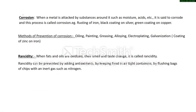Now at the last part of this chapter: corrosion. You are familiar with the term rusting — rusting of iron is one example of corrosion. When a metal is attacked by substances around it such as moisture, acid, and oxygen, it is said to corrode, and this process is called corrosion.